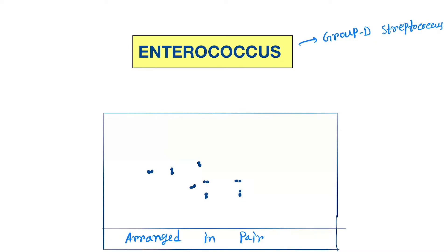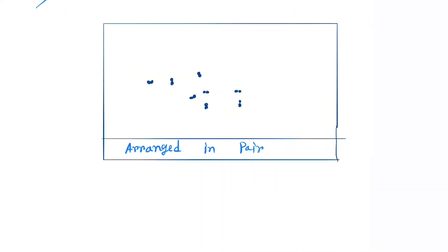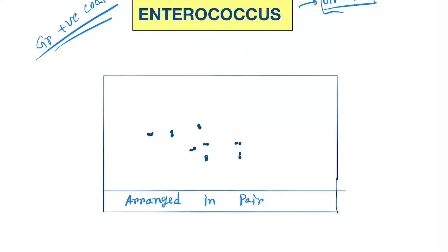Hello friends, today our topic is Enterococcus. Enterococcus is a gram-positive cocci, also called group D streptococcus. If we do Gram staining and see under the microscope, we'll see a pair-like structure, not a single cocci.